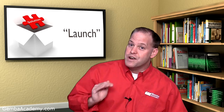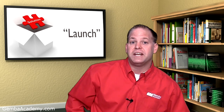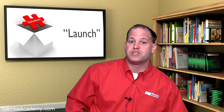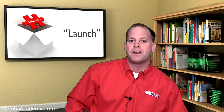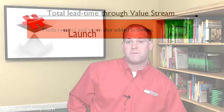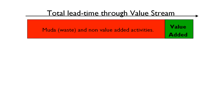Another way of understanding the power of a value stream is to think about the overall lead time for a product or service. When we look at any process, we typically find a large amount of non-value-added activity, or waste. The Japanese word for waste is muda.